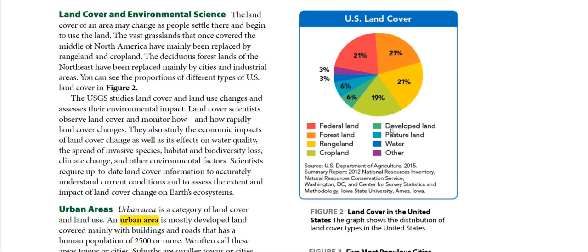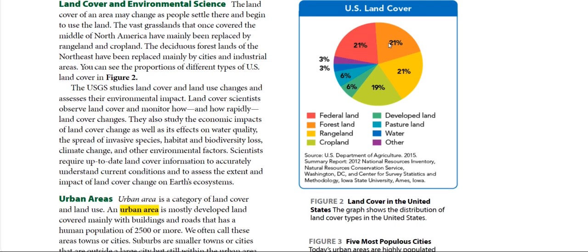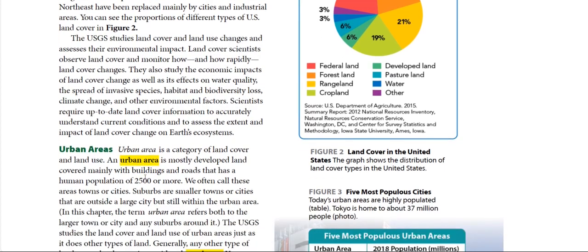In the U.S. land cover diagram, we have the developed land shown in green, water, and forest land. The orange represents 21 percent, then we have federal land which is also 21 percent, and others which is 3 percent.